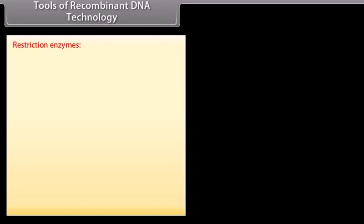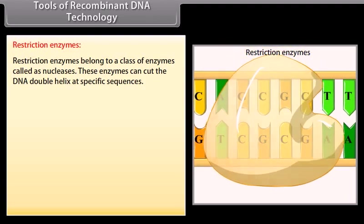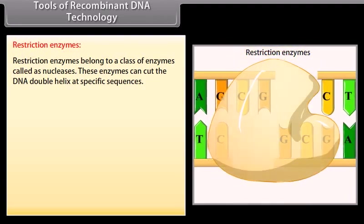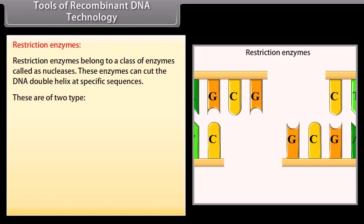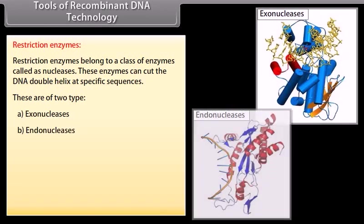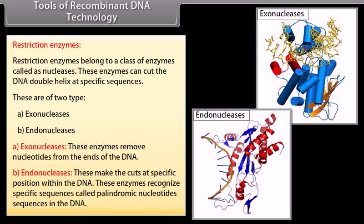Tools of recombinant DNA technology — Restriction enzymes: Restriction enzymes belong to a class of enzymes called nucleases. These enzymes can cut the DNA double helix at specific sequences. There are two types: exonucleases, which remove nucleotides from the ends of the DNA, and endonucleases, which make cuts at specific positions within the DNA. These enzymes recognize specific sequences called palindromic nucleotide sequences in the DNA.